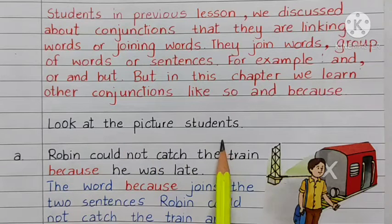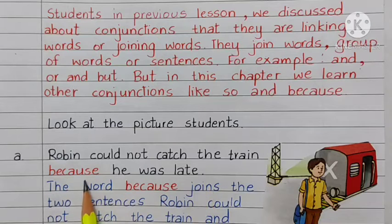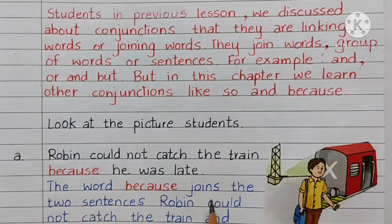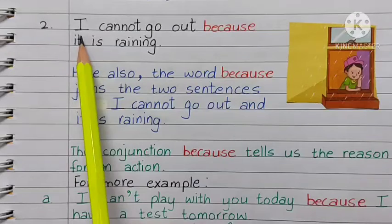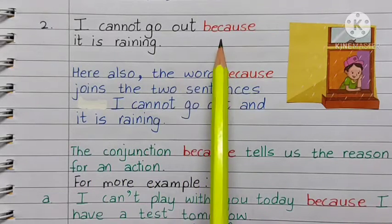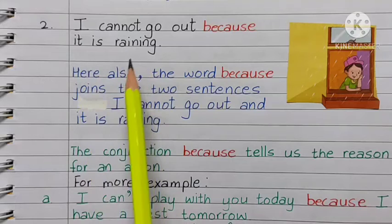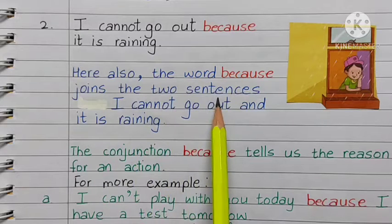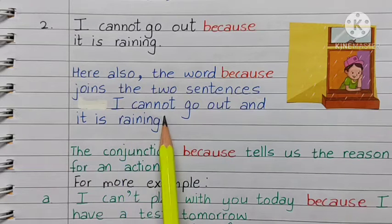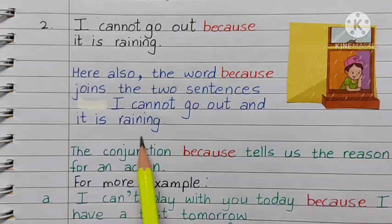Look at the picture, students. Robin could not catch the train because he was late. The word 'because' joins the two sentences: Robin could not catch the train, and he was late. I cannot go out because it is raining.